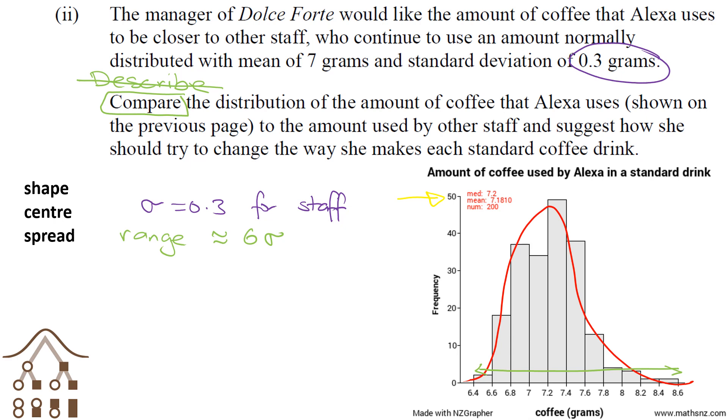The range for this one is 8.6 minus 6.4—the range is about 2.2 grams. So the standard deviation is about 2.2 divided by 6, which is about 0.367 grams. That's more variation than the other staff had—the other staff had a variation of 0.3 grams. So we should say it's more variable.